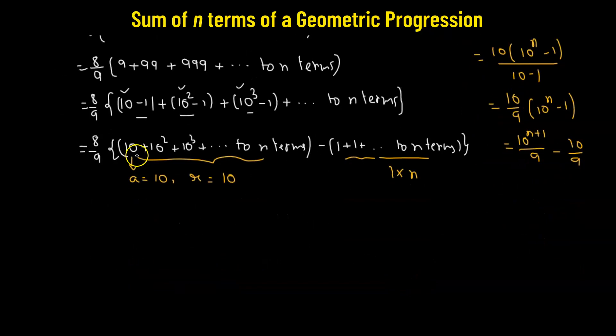Therefore, our sum will now become Sn equals 8 over 9. So 8 over 9 is multiplied by this particular sum, which is 10 raised to the power of n plus 1 divided by 9 minus 10 over 9 minus n.